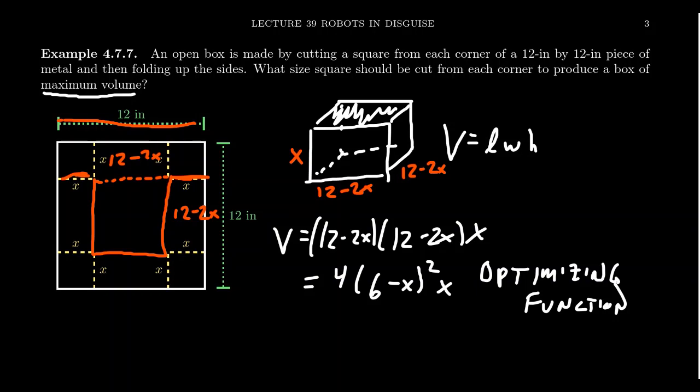So since this thing is a square, I'm going to leave it factored. As I take the derivative, we're going to use the product rule this time. We're going to get 4 times 2 times 6 minus x times negative 1, don't forget the inner derivative, times x plus, well the derivative of x is just 1, so we get 6 minus x squared here.